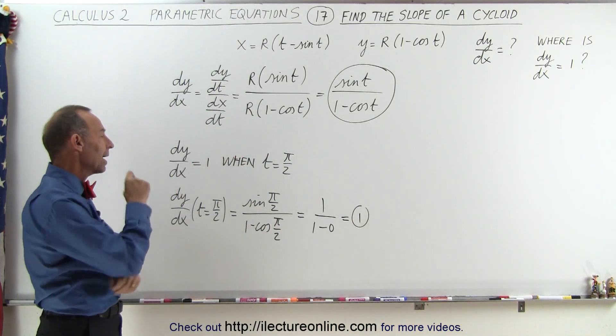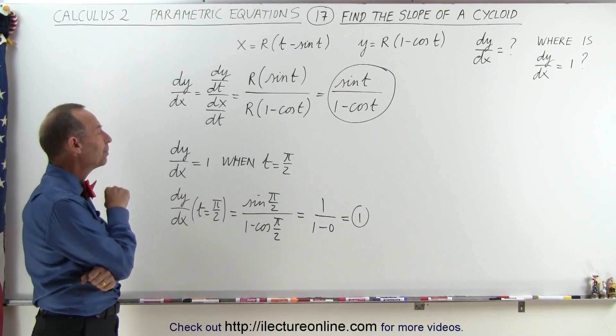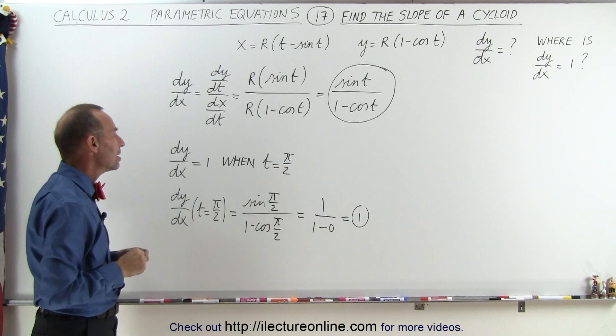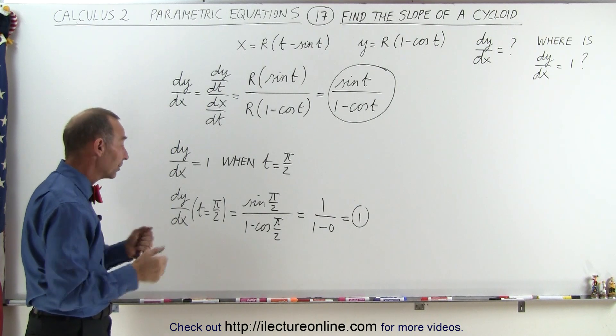Now could we have, let's see here, yeah that would be the only place where the slope can be equal to 1, everywhere else the slope will not be equal to 1.